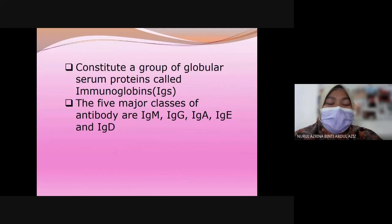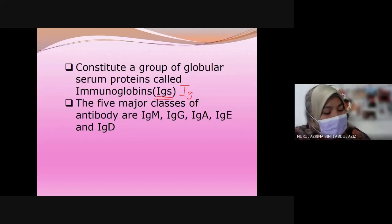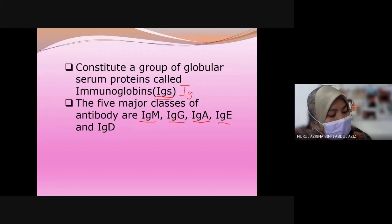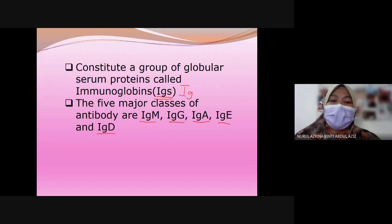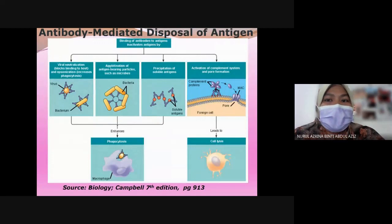The antibody constitutes a group of globular serum proteins known as immunoglobulins (Ig). There are five major classes of antibody: IgM, IgG, IgA, IgE, and IgD — each with different functions. Some are found abundantly in breast milk, and they each have different roles that we will look at.